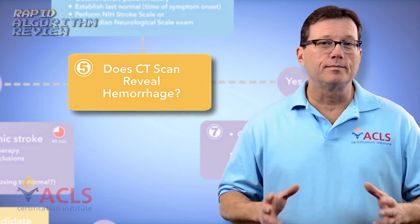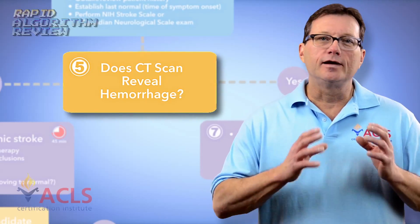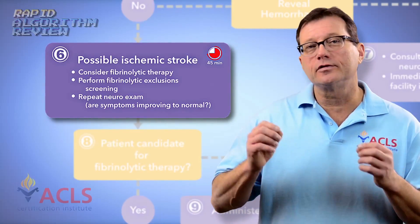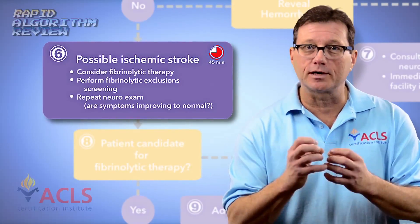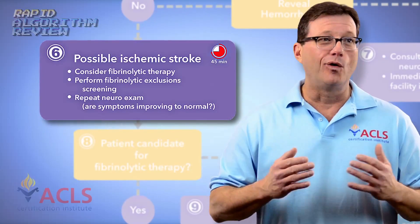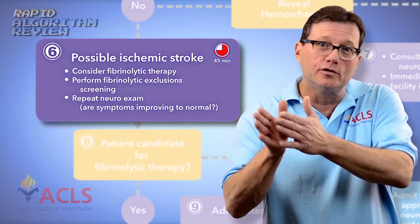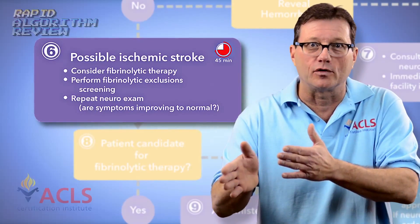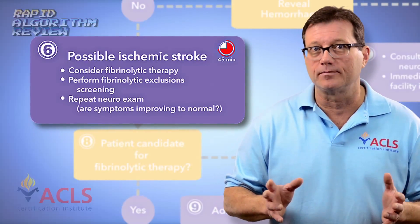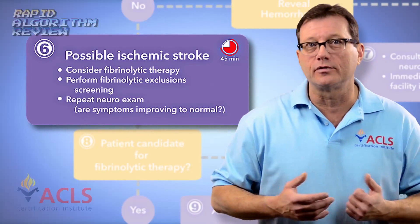Looking at strokes, we can break them into two categories: ischemic and hemorrhagic. In an ischemic stroke, a clot has formed — just like in a heart attack, a vessel in the brain develops plaque, the plaque ruptures, forms a clot, and occludes blood flow to that part of the brain. Or a clot forms downstream, floats to the brain, and gets wedged in a vessel. Ischemic strokes account for about 87% of all strokes, and we can treat them with fibrinolytic therapy to bust up the clot and restore blood flow.